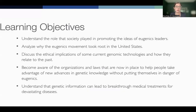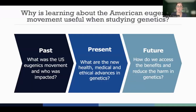We want to be able to understand the role that society played in promoting ideas of the eugenics leaders, analyze why the eugenics movement took place in the United States, talk about the ethical implications of some current things, and become aware of organizations and laws that are now in place and think about the future.